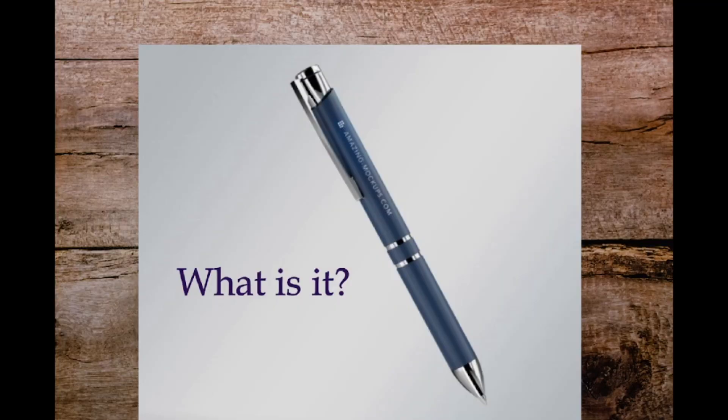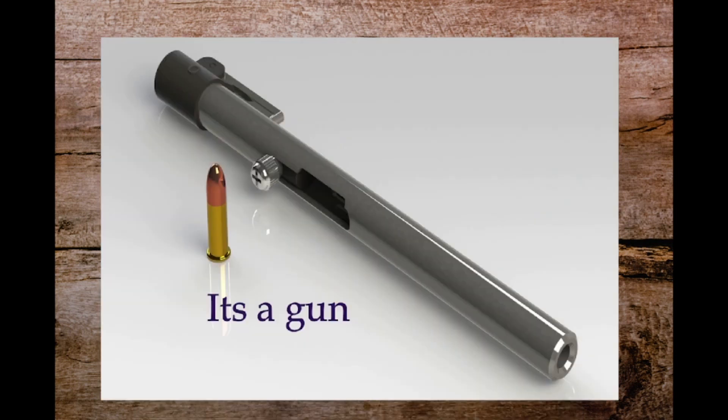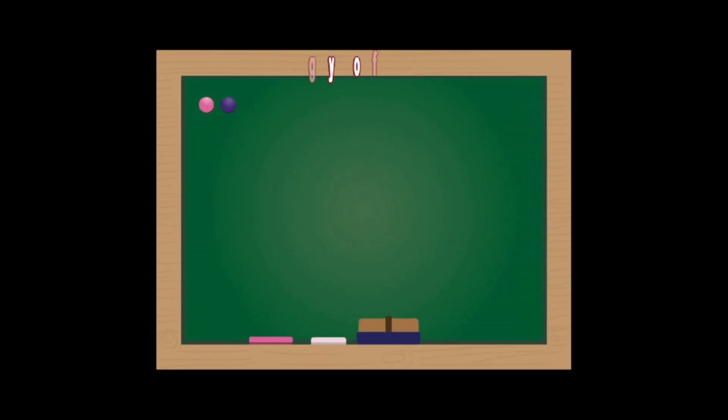Let me give you a demo. What is it? Most of you will answer it's a pen. But one person who was once shot with a pen gun, similar in shape, will answer it's a gun. So this person's answer reflects subjective ontology based on his past experience.